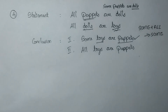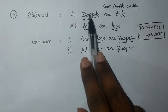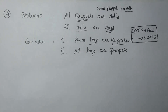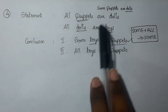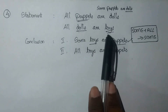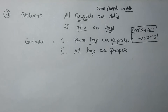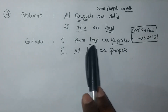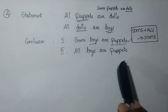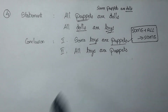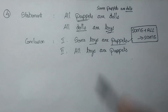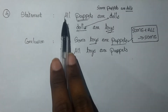Some toys are puppets — conclusion 1 is correct. Applying the Some plus All rule: Some puppets are dolls, All dolls are toys — Some plus All gives Some, so Some puppets are toys. Since 'Some' is reversible, Some toys are puppets also follows — first conclusion is correct. For the second conclusion, All toys are puppets — All plus All gives All — All puppets are dolls, All dolls are toys, giving All puppets are toys.